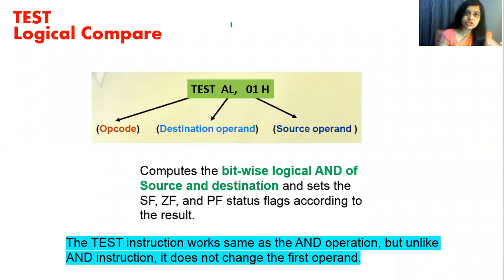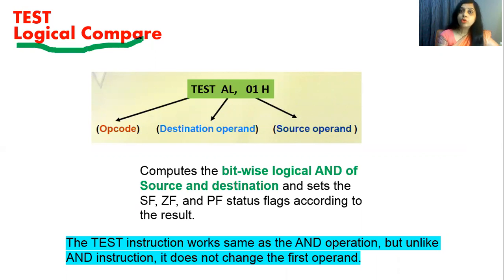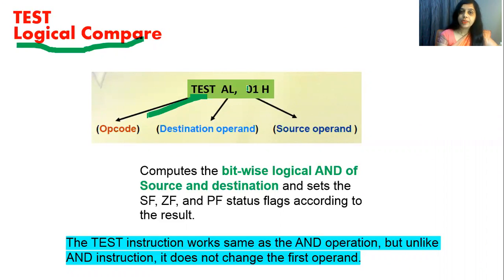The TEST instruction of the 8086 microprocessor is a logical compare instruction — it is used to compare two words. Its format is: TEST followed by a comma and operands. TEST is a mnemonic, and every mnemonic has its unique hexadecimal code. The operand is classified into two parts: source operand and destination operand.